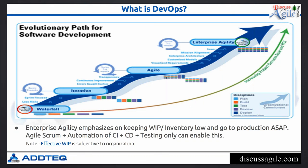Agile methodologies improved what software development teams could deliver, but the block that actually gets reviewed or deployed to production remained similar to the iterative model. Then came the need for enterprise agility, along with continuous integration, continuous deployment, and lean methodologies. The crux of enterprise agility is how to keep your work in progress or inventory as low as possible.